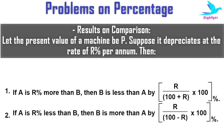Now let's see results on comparison. If A equals R percent more than B, then B is less than A by R by (100 + R) into 100 percent. And if A is R percent less than B, then B is more than A by R by (100 - R) into 100 percent.